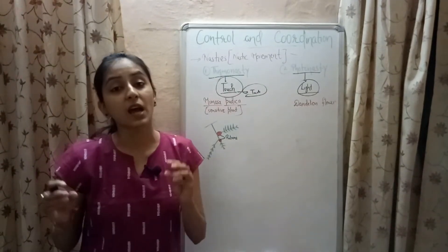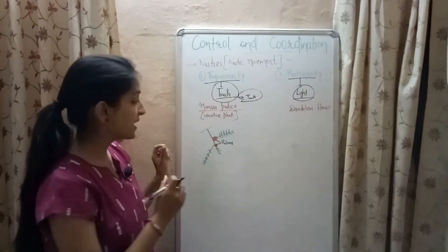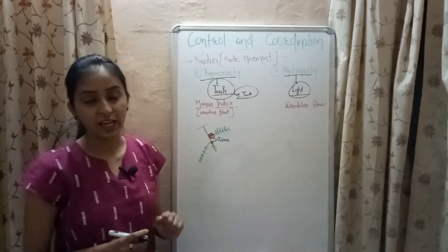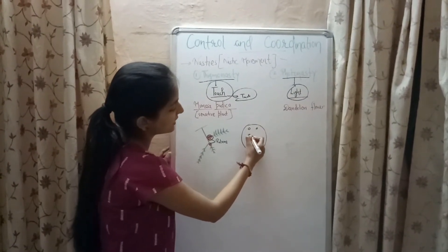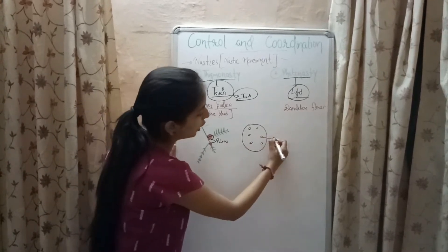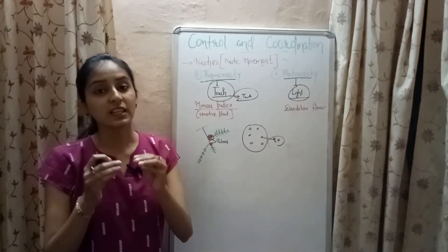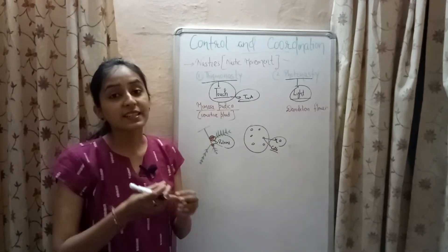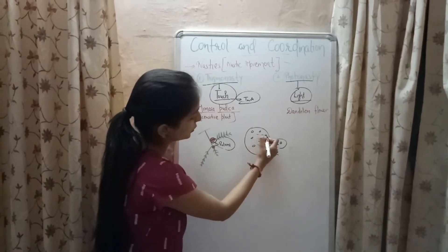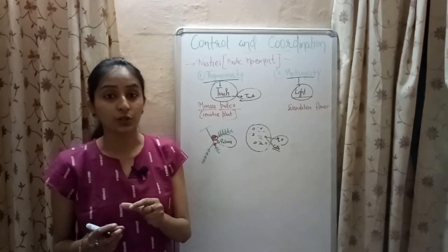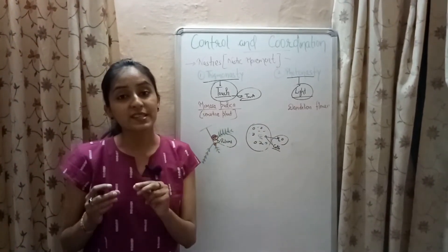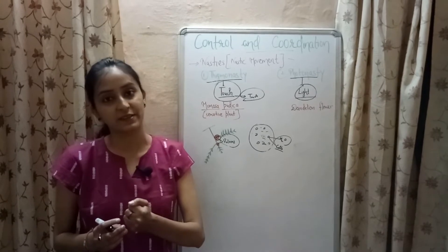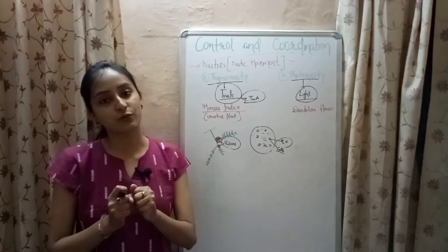The reason behind the folding of leaves in Mimosa pudica is the pulvinae — a pad-like swelling at the base of the leaves containing cells with a lot of water. When you touch the leaves, the water inside the cells of the pulvinae gets released into the spaces between the cells, causing the leaves to fold up.